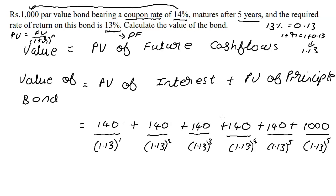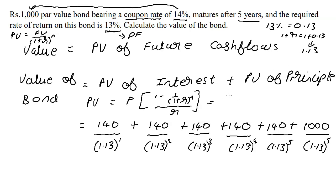Rather than doing each year painfully, for the five years of interest we can use the present value of an annuity formula: PV = P × [1 − 1/(1 + r)^n] / r. Substituting for one rupee first: 1 × [1 − 1/1.13^5] / 0.13.